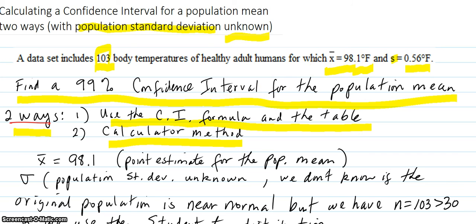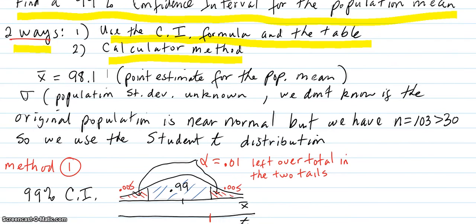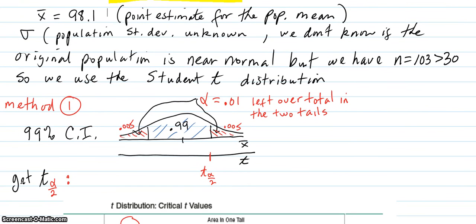What we know so far is that the sample mean is 98.1, and that's the point estimate for the population mean. Sigma is unknown. We don't know if the original population is near normal or not, but the n equals 103, being greater than 30, says that we can use the student t distribution anyway.